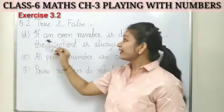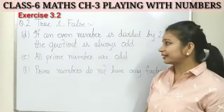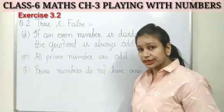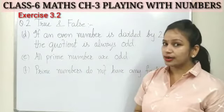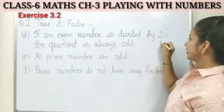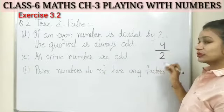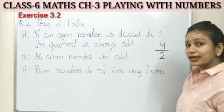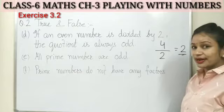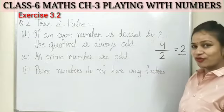Statement D: if an even number is divided by two, then the quotient is always odd. Let's check. Take even number four and divide by two. Two twos are four, so the answer is two. Is two an odd number? No. So this statement is false.